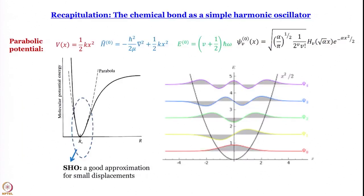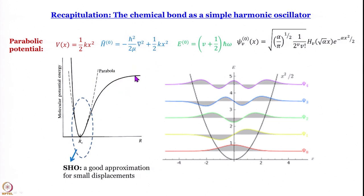Now let us go ahead and talk about the anharmonic oscillator. To do that let us recapitulate the simple harmonic oscillator: the parabolic potential V(x) = ½kx². The unperturbed Hamiltonian is −ℏ²/(2μ) · d²/dx² + ½kx². Here μ is the reduced mass — when you have two bodies m₁ and m₂, μ is more like the smaller mass when we talk about relative motion.